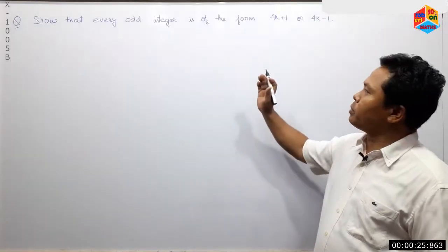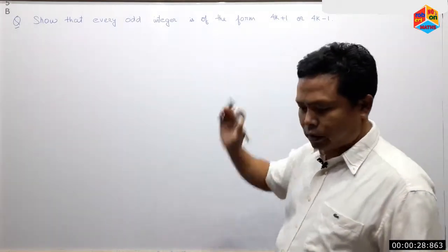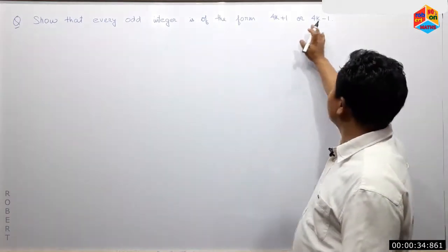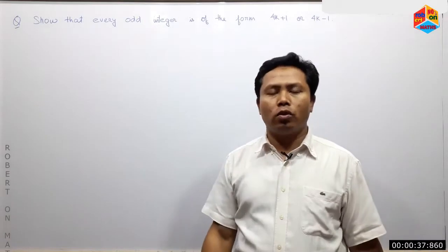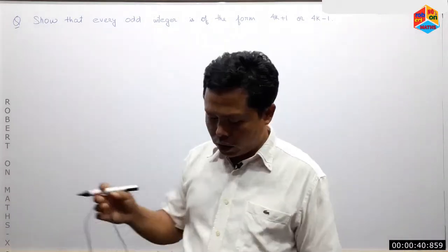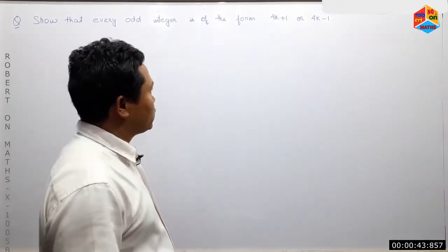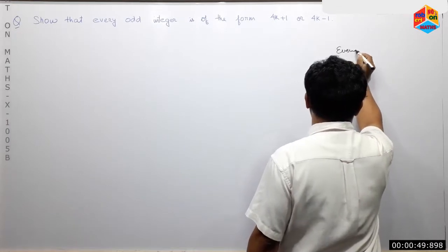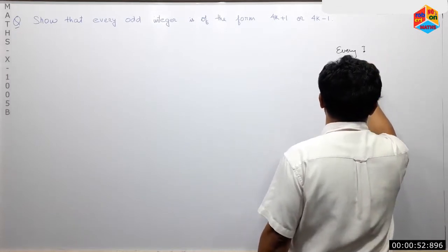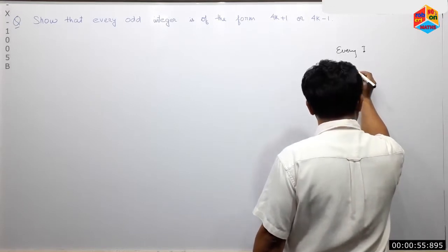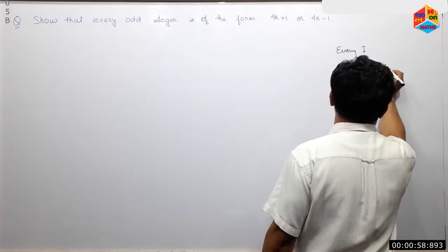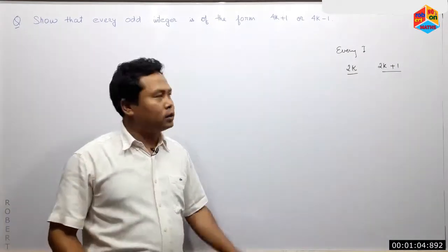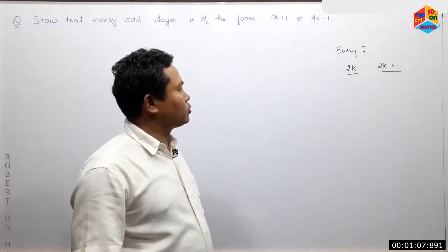Hello everyone. I have a question for you, but I am not going to ask you a question. The integer is of the 4k plus 1 or 4k minus 1 form. Every integer is of the form 2k plus 1 — these are the ones who form a class of 1.